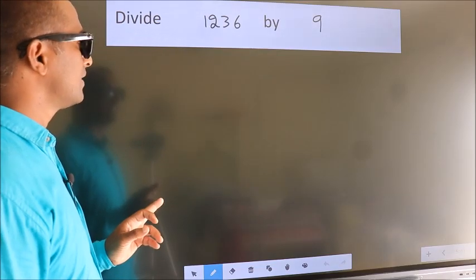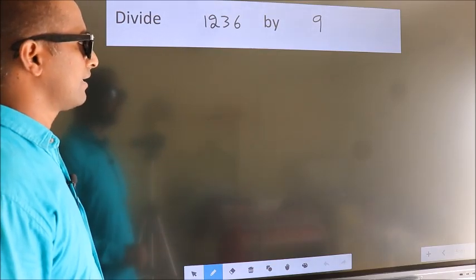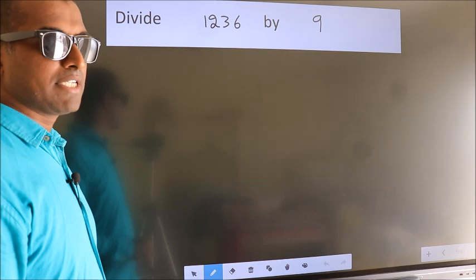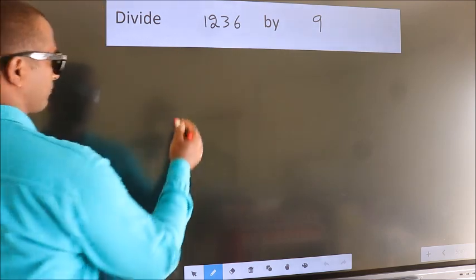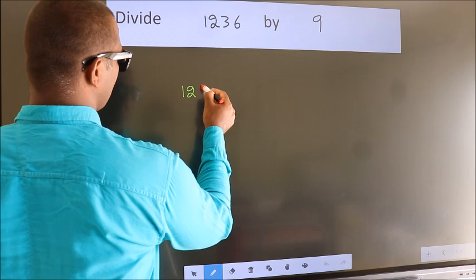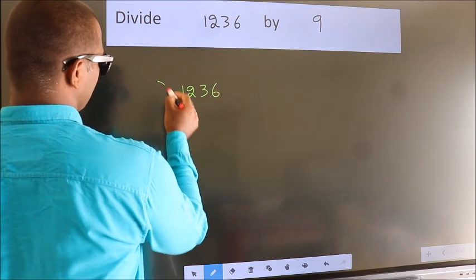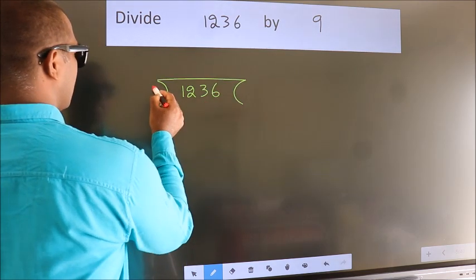Divide 1236 by 9. To do this division, we should frame it in this way. 1236 here, 9 here.